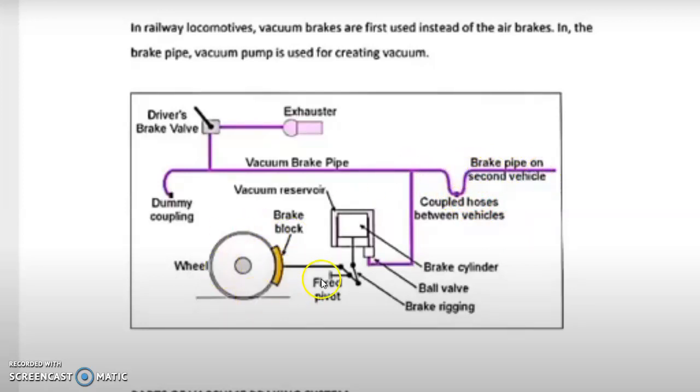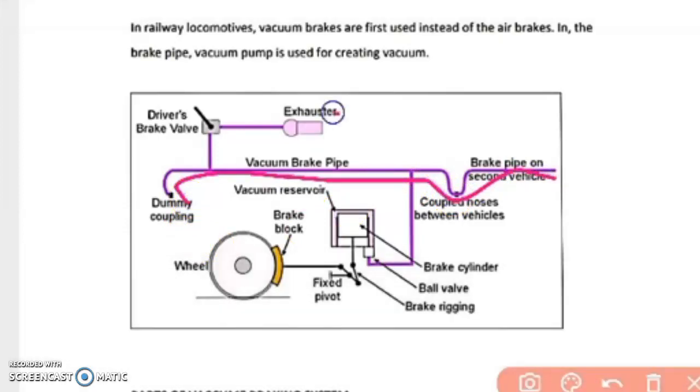This is a diagram of one wheel only. Here we are having a wheel which is made of steel and a brake block which is in the lower part of this wheel. These are the constructional parts. Here the dummy coupling is an extension from this side to the total whole side of this. These are called your exhauster.